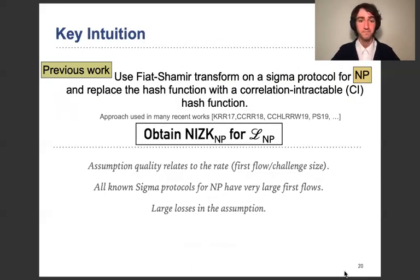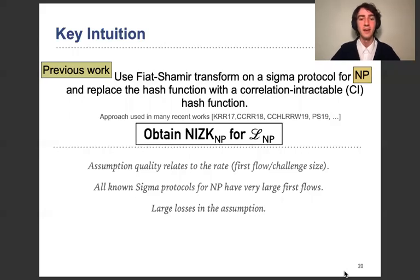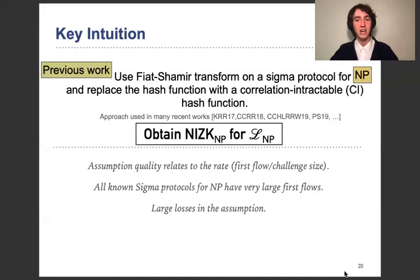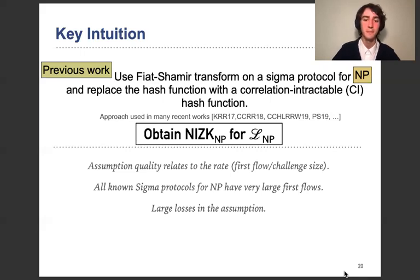What is the key intuition of our scheme? The previous work used the Fiat-Shamir transform on a Sigma protocol that worked for an NP-complete language, covering the whole NP, then replaced the random oracle with a correlation-intractable hash function, directly obtaining a NIZK for the whole NP. But if we look at the proof techniques available to us, we can observe that the assumption quality relates to the ratio between the size of the first flow in our Sigma protocol and the challenge size. Unfortunately, all known Sigma protocols for NP have very large first flows, resulting in big losses in our assumption — so worst assumptions.